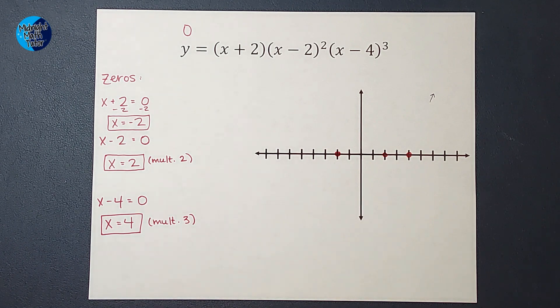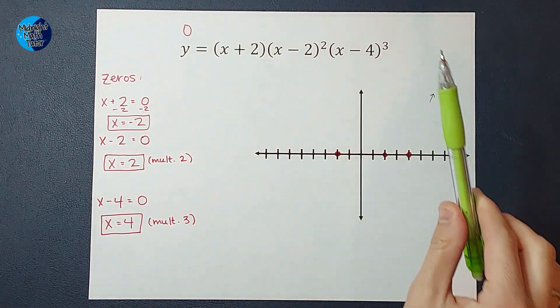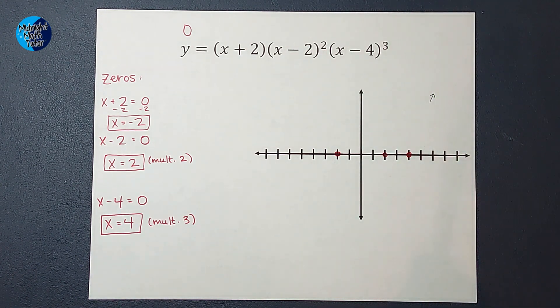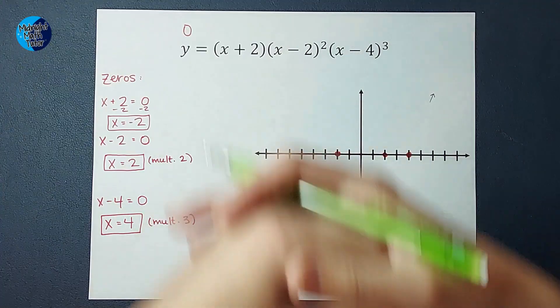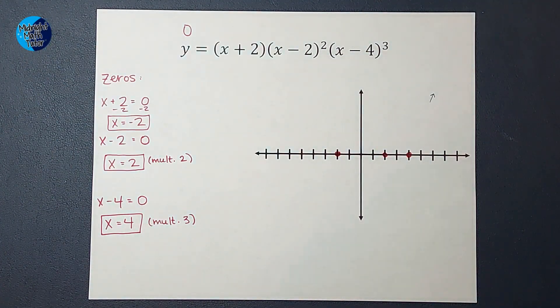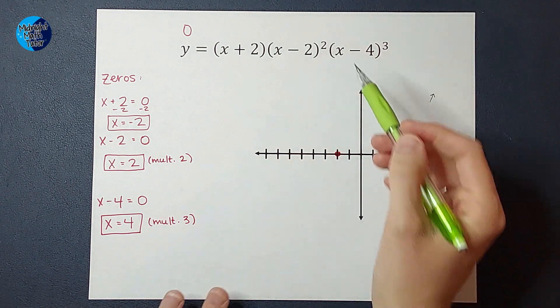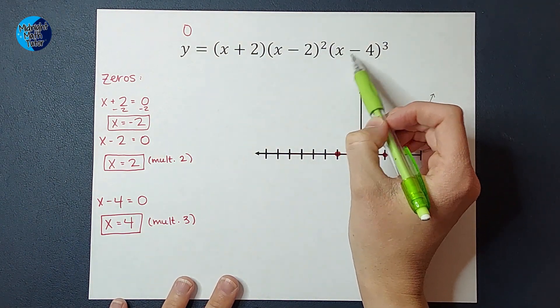Now, for the left side of the graph, I look at my degree, which is the highest exponent. Now, you might be tempted to say, well, 3 is the highest exponent. But we need to think of what the highest exponent is, again, if this were all multiplied together. So if this were all multiplied together, I would have these three x's, these two x's, and this x all multiplied together.